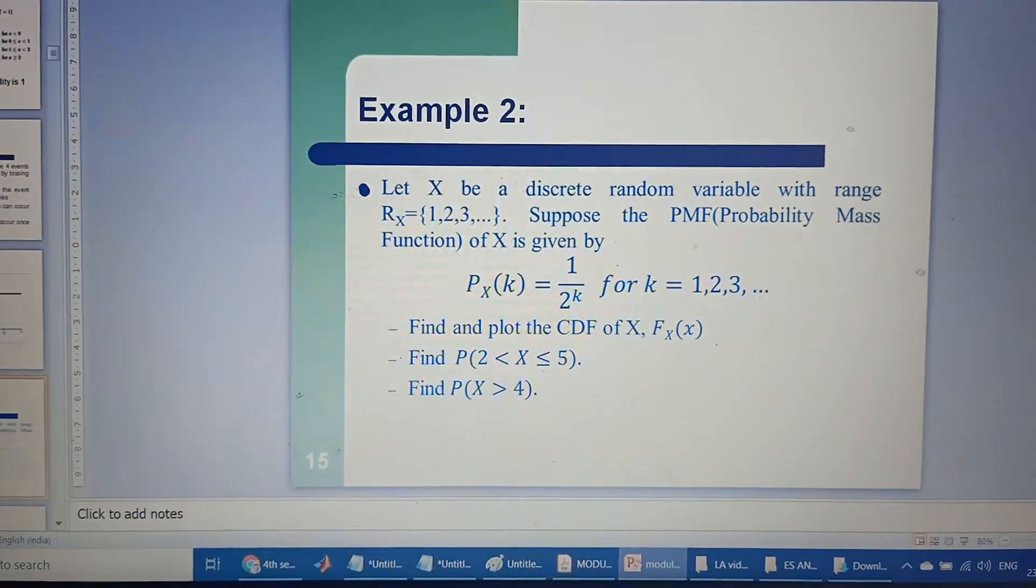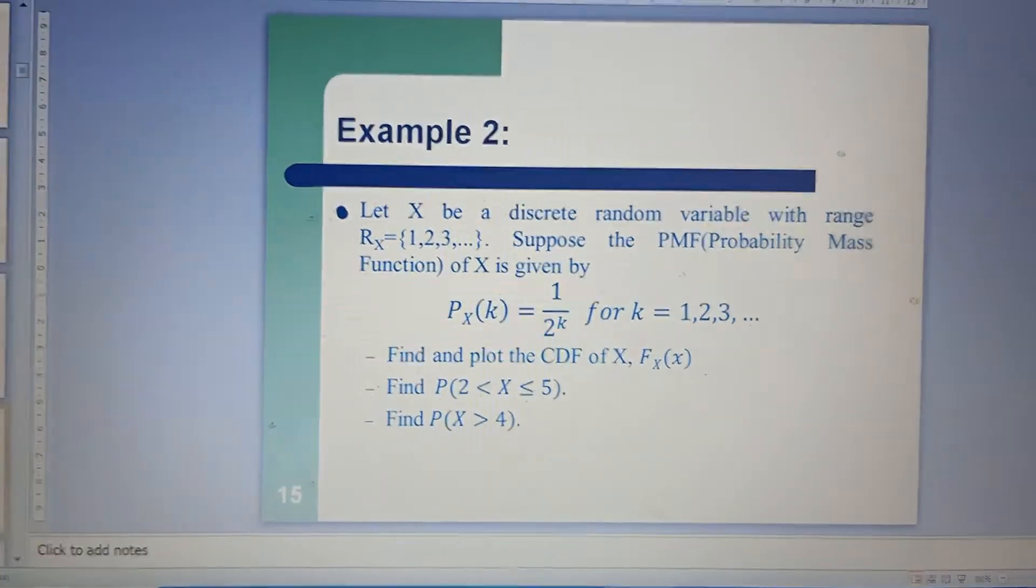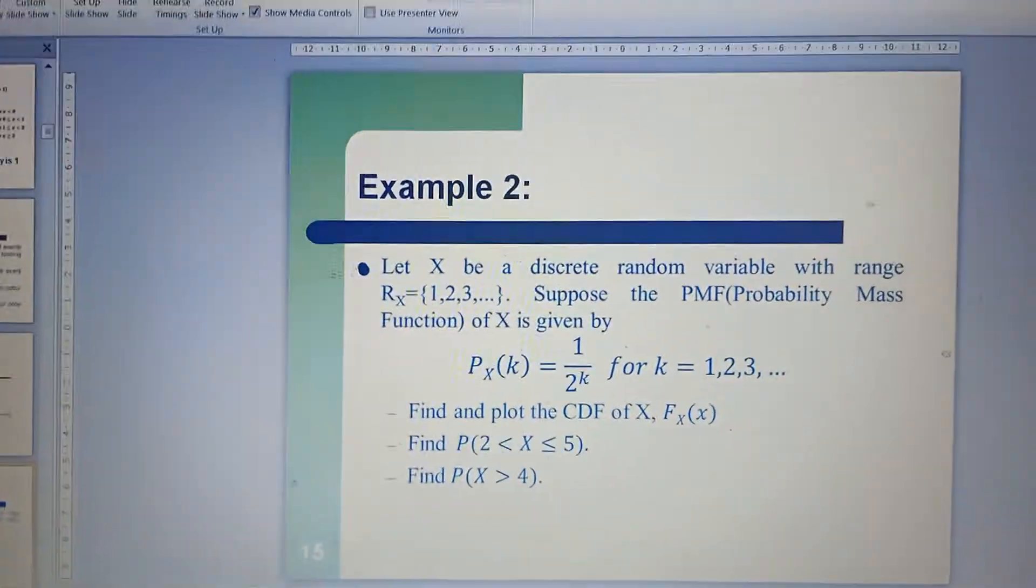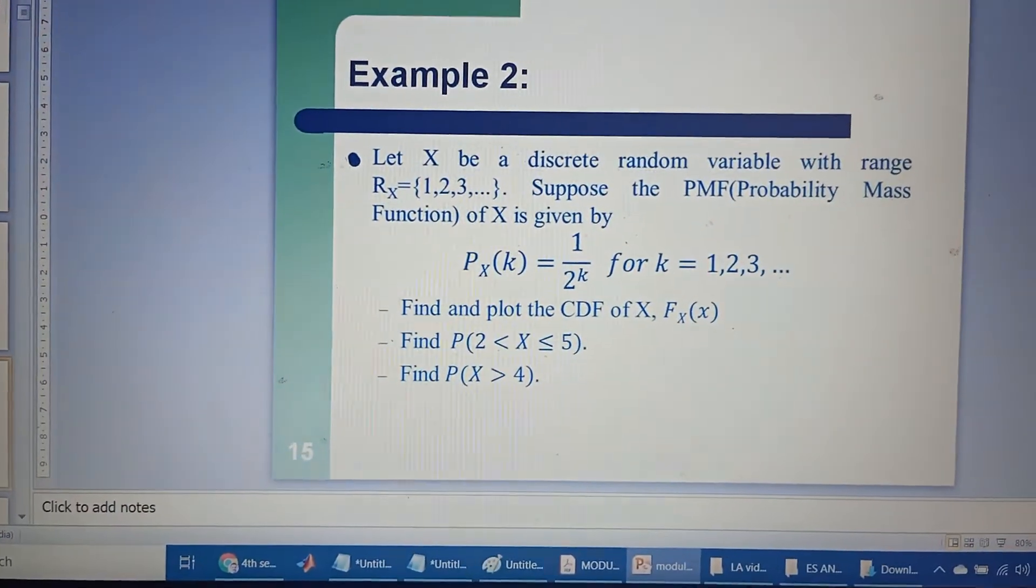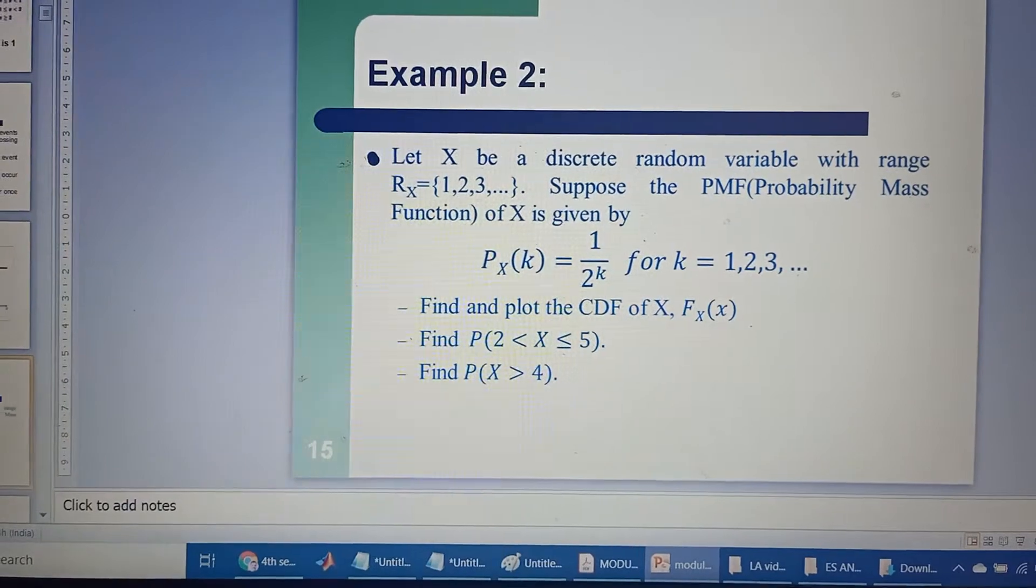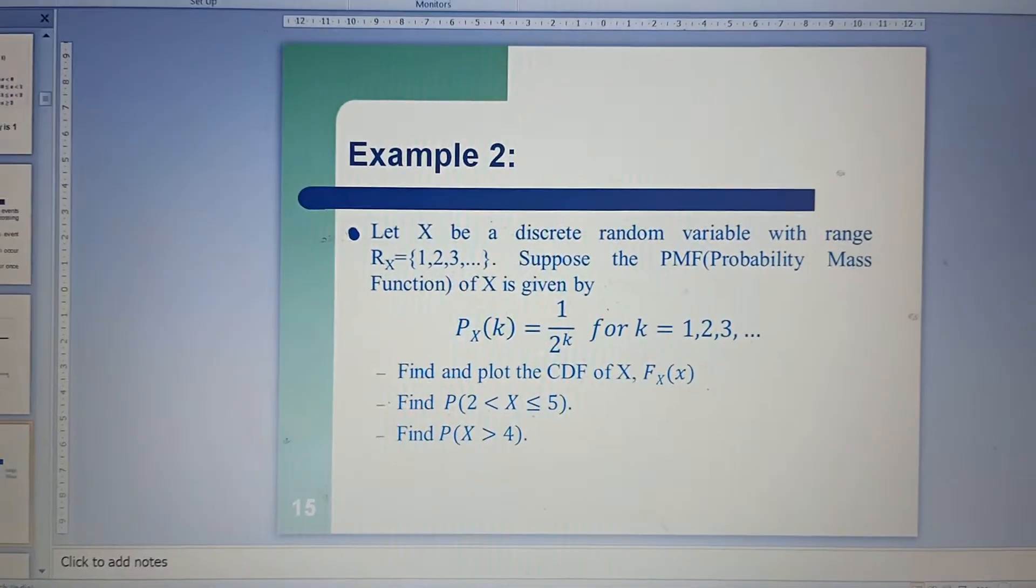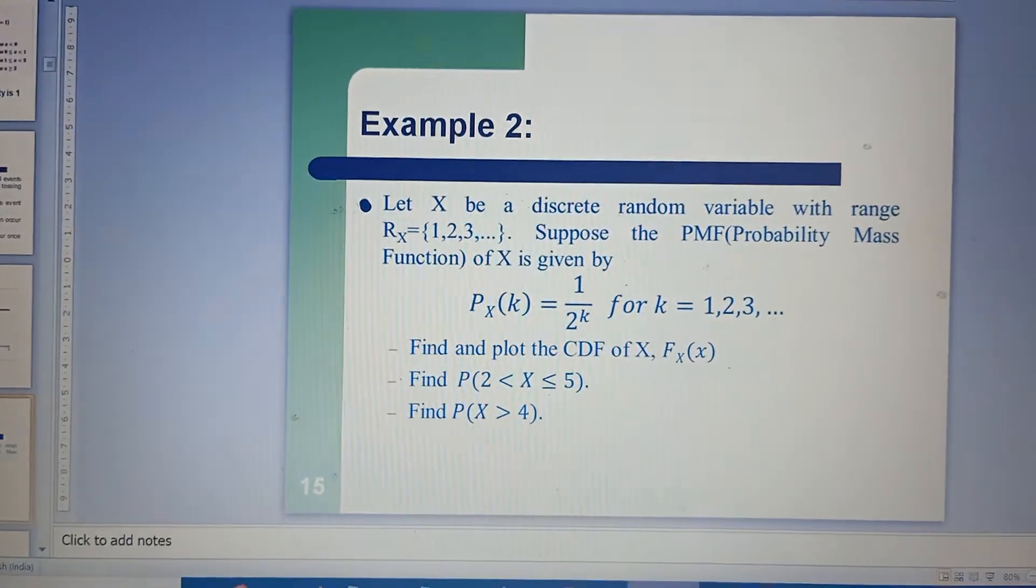Suppose the probability mass function of X is given by P_X(k) equals 1 over 2^k, where k takes values from 1, 2, 3, and so on.